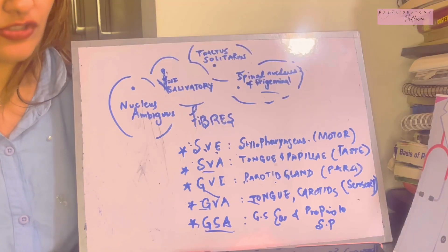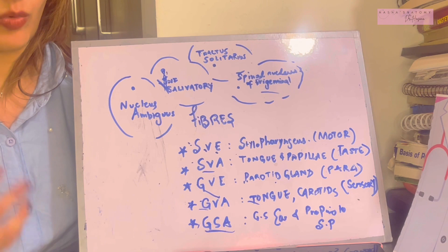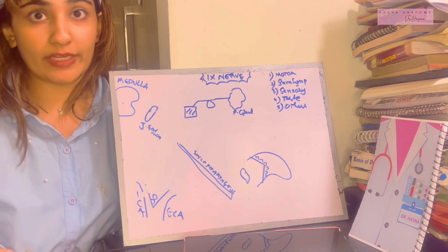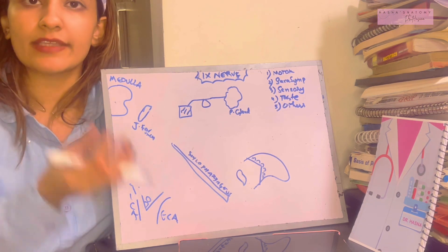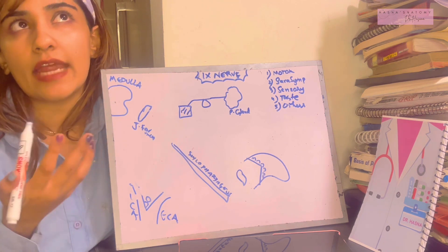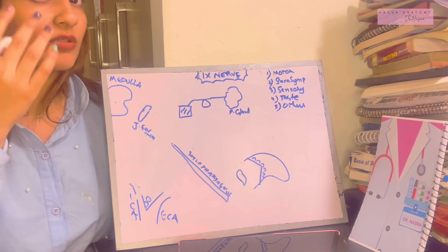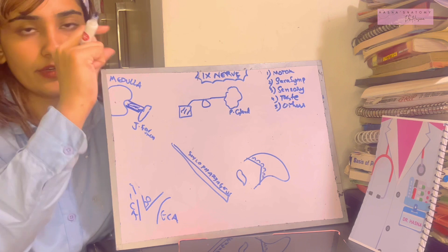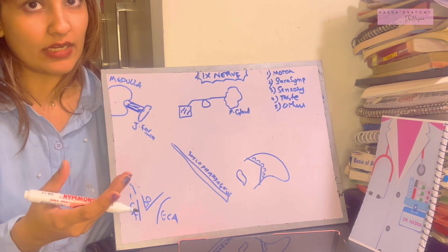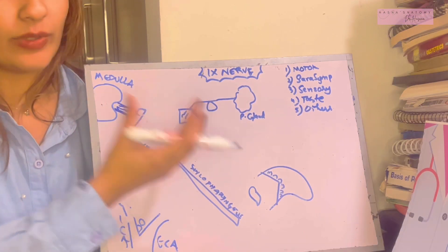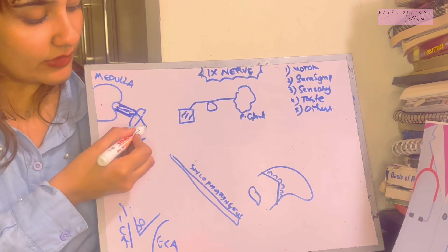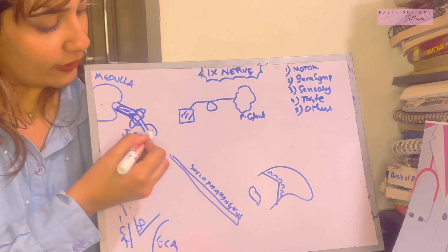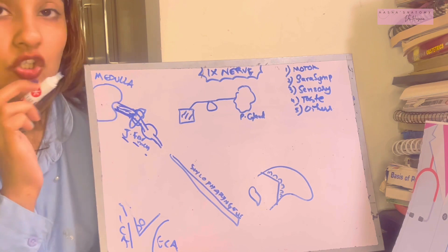Now let's talk about the course of the glossopharyngeal nerve and its branches. It originates in the medulla oblongata with those four nuclei. It is a mixed nerve because it carries motor, parasympathetic, taste, and sensory fibers all in one nerve. When it leaves the medulla oblongata to exit the cranial cavity, it passes through the jugular foramen. Inside the jugular foramen it has a superior ganglion, and below the foramen it forms the inferior ganglion.